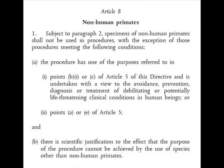We're now on to Article 8, non-human primates. Considering that we were hoping that non-human primates would be outlawed from being experimented on in the EU, this is a particularly distressing article. It reads: subject to paragraph two, specimens of non-human primates shall not be used in procedures with the exception of those procedures meeting the following conditions. It would have been a lot quicker to say what you couldn't use primates for, because basically it seems like you can use primates for nearly everything.